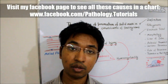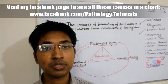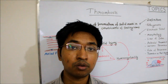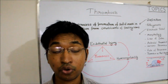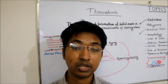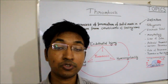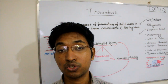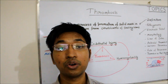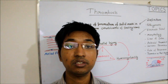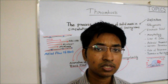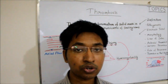Secondary hypercoagulability occurs due to acquired causes. These include prolonged bed rest, prolonged immobilization such as during a long flight lasting 10 to 12 hours, myocardial infarction, atrial fibrillation, disseminated intravascular coagulation, and heparin-induced thrombocytopenia. So now that we have discussed all three components of Virchow's triad, we will move on to discuss the morphology of thrombus.